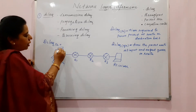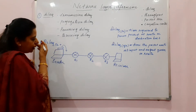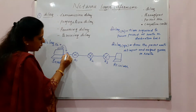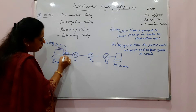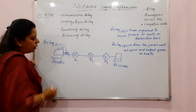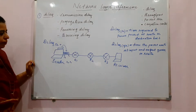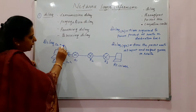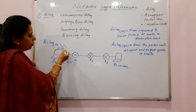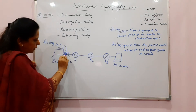The sender places the packet onto the link — onto the wire. A packet consists of bits, so the sender is placing bits onto the link: first bit, second bit, third bit, and so on. All these together form one packet. The time taken to place the first bit is t1, and to place the last bit is t2. The difference between t2 and t1 is the transmission delay. The bigger the packet, the more time the sender takes to place it on the link.